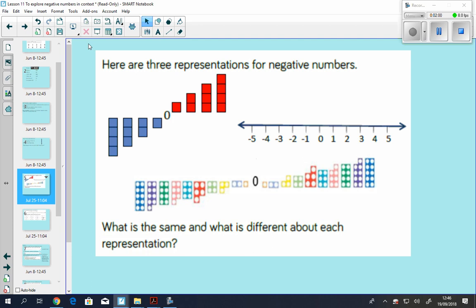Here we have some representations for negative numbers, and we're trying to compare and see what's the same and what's different. They're all versions of number lines. This one uses bars going from negative 4 (the cold temperatures in blue) to positive 4. This one goes from negative 5 to positive 5. And this one goes from negative 10, upside down like these bars, up to positive 10, which are right side up like these red bars.